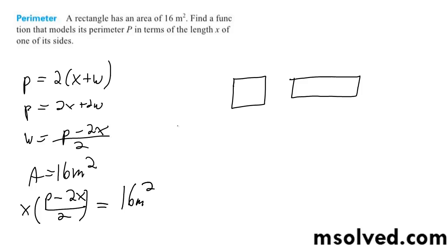And then what we can do here is divide through by the x. So p minus 2x divided by 2 is equal to 16 divided by x, and then multiply by 2.